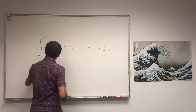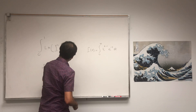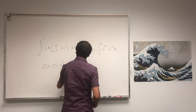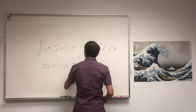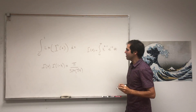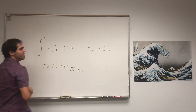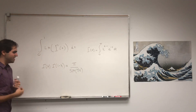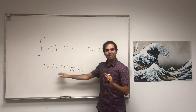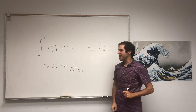The Euler Reflection Formula is given as follows: gamma of x times gamma of 1 minus x equals pi over sine of pi x. Of course, it's for x not an integer, which is okay because x is strictly between 0 and 1, which is not an integer. There is a video on this — very beautiful, you should check it out. But for today, let's just take this for granted.